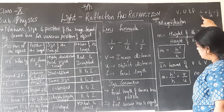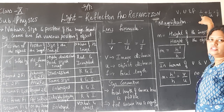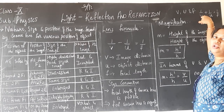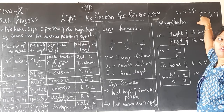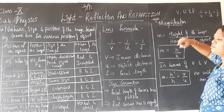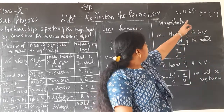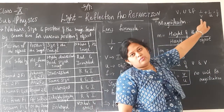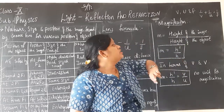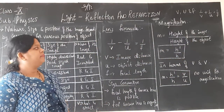You should always write image distance v first, so that you will not go wrong in problems when you shift the terms from one side to another. So, 1/v + 1/u = 1/f was the mirror formula.